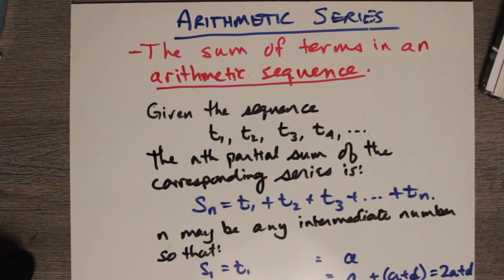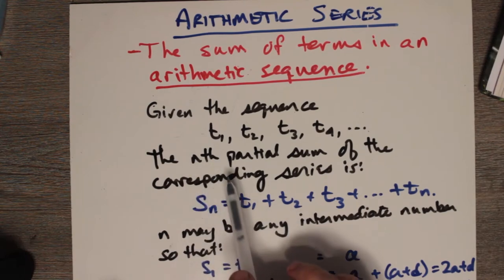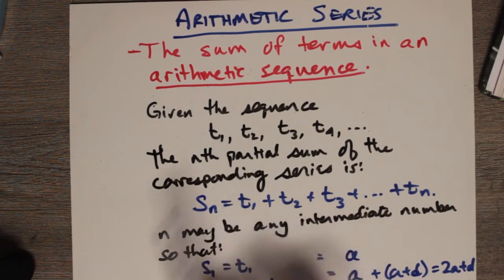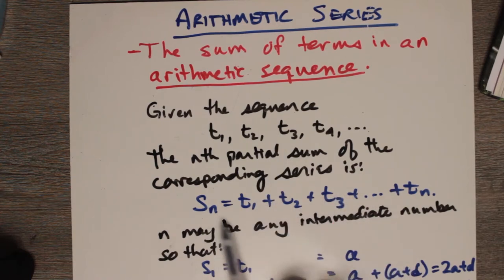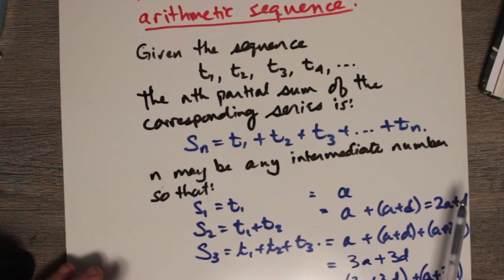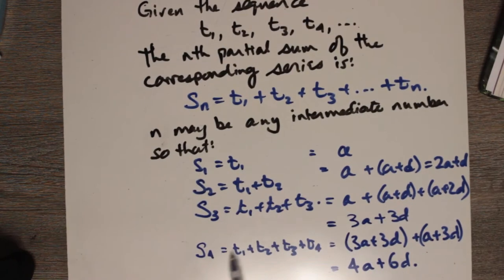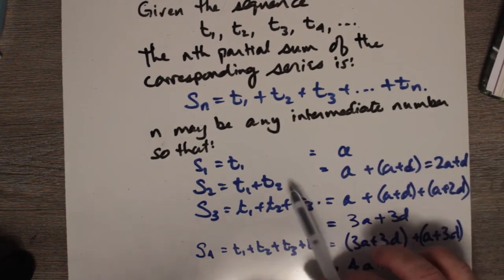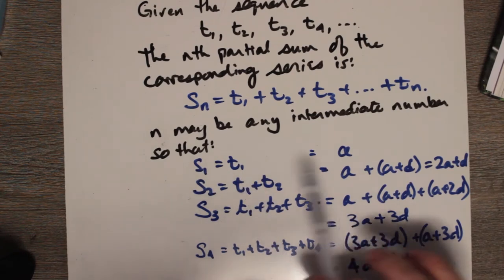We can also take the partial sum. We could take t1 plus t2, or t1 plus t2 plus t3, and so on. For example, we could have t1 plus t2 plus t3 plus t4.